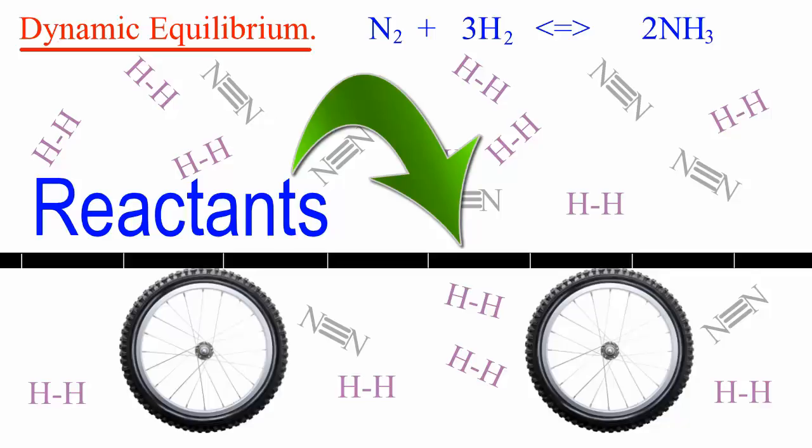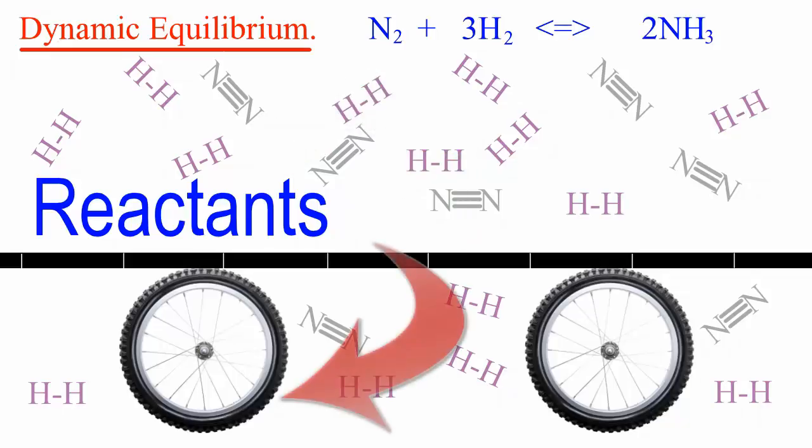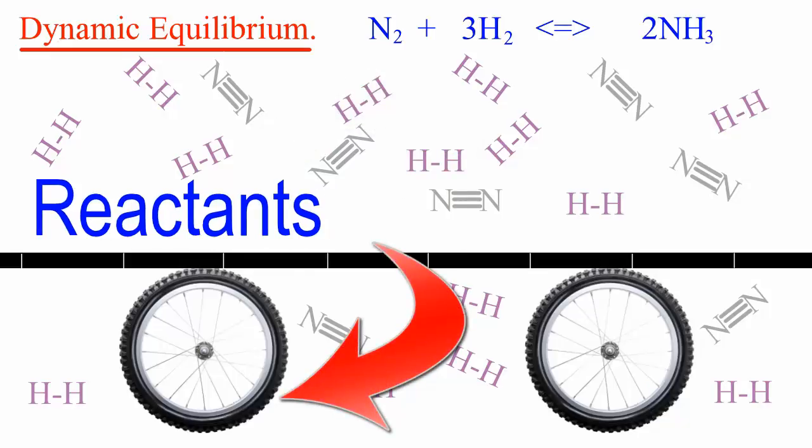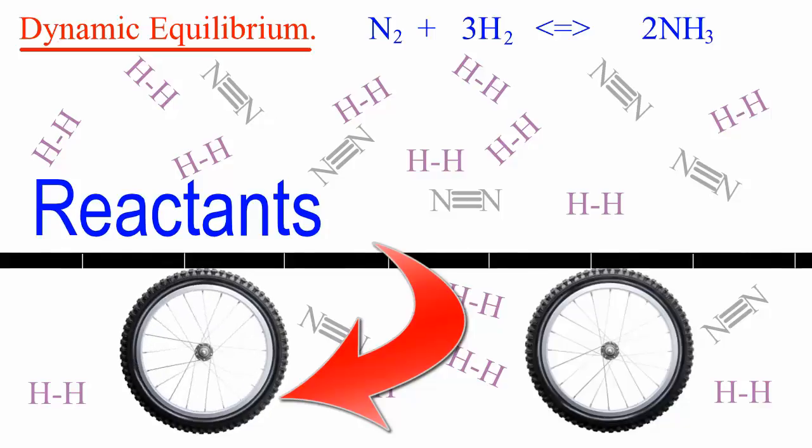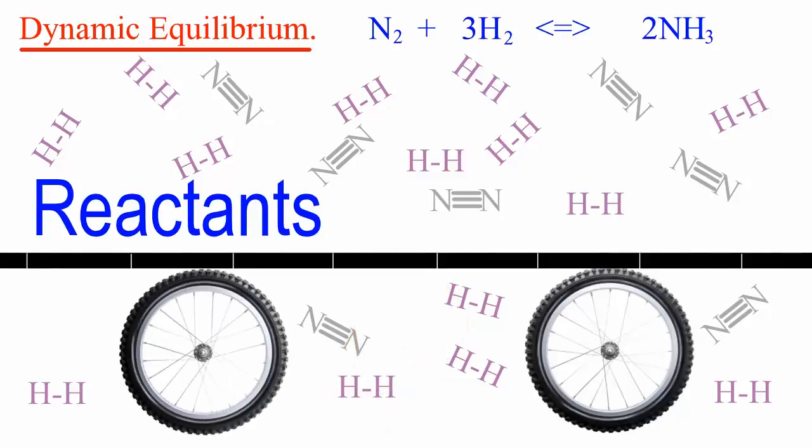We have reactants on the left which are going to be converted into products. We start up the wheel on the left, representing starting up the reaction, and reactants begin to form products. You can see on the right in red, products begin to form.